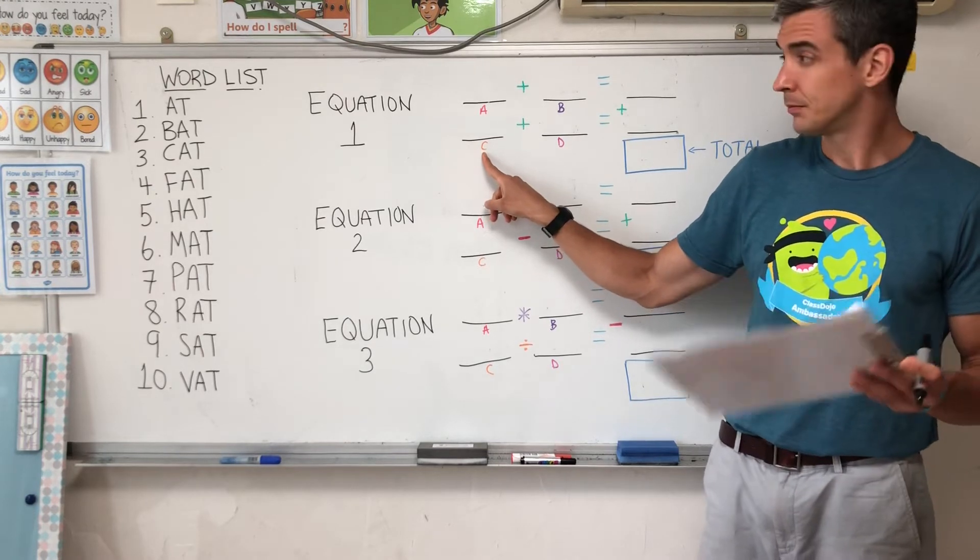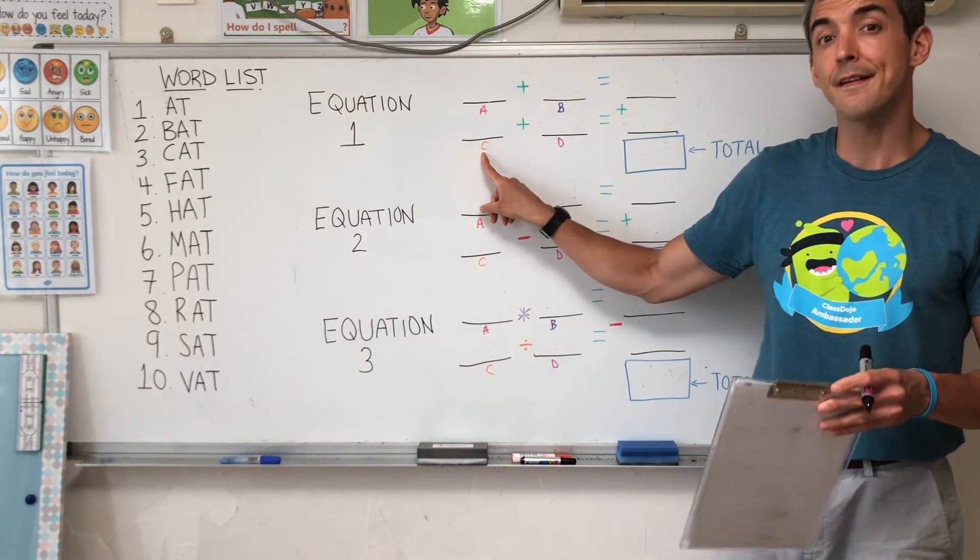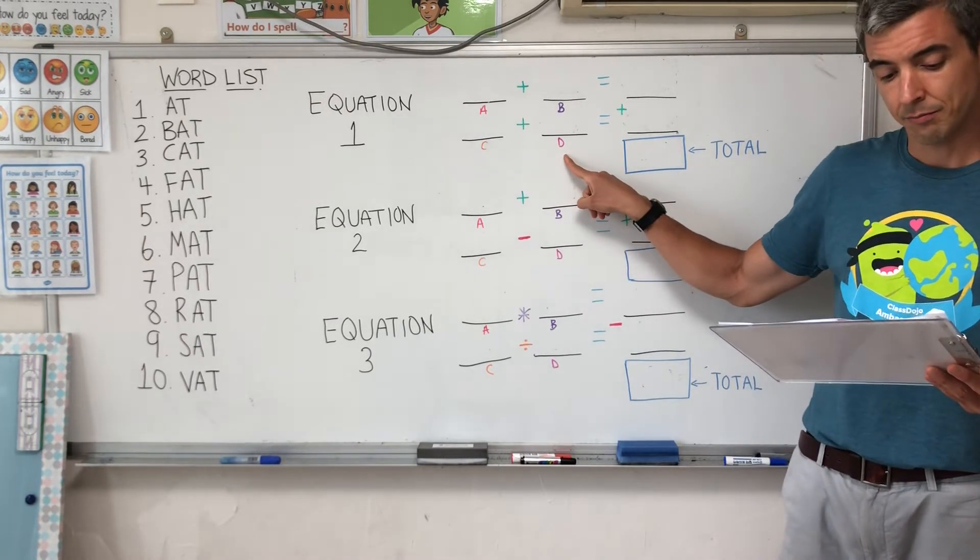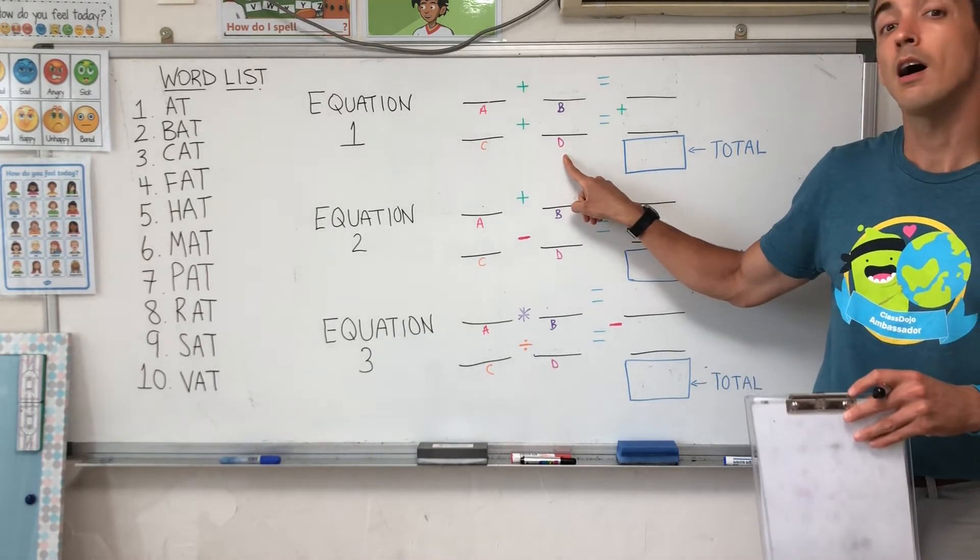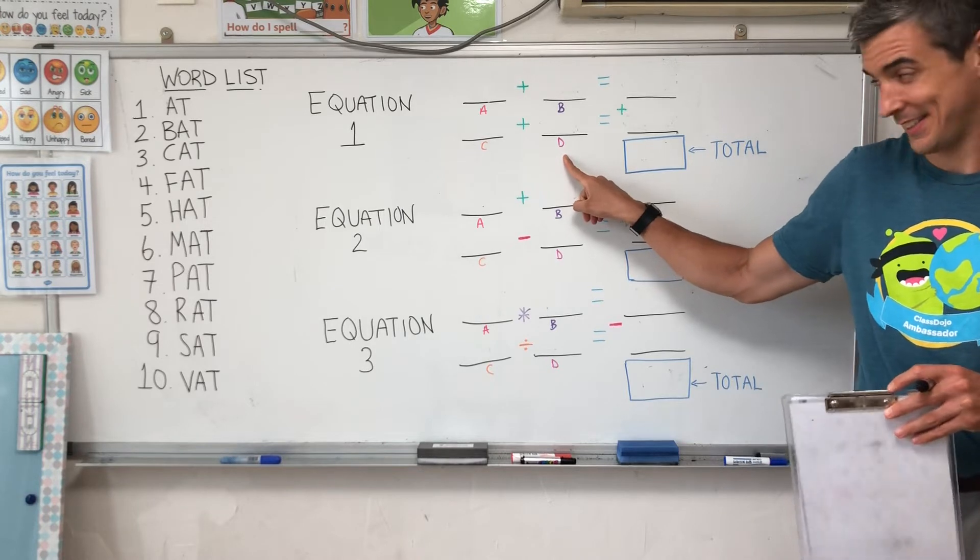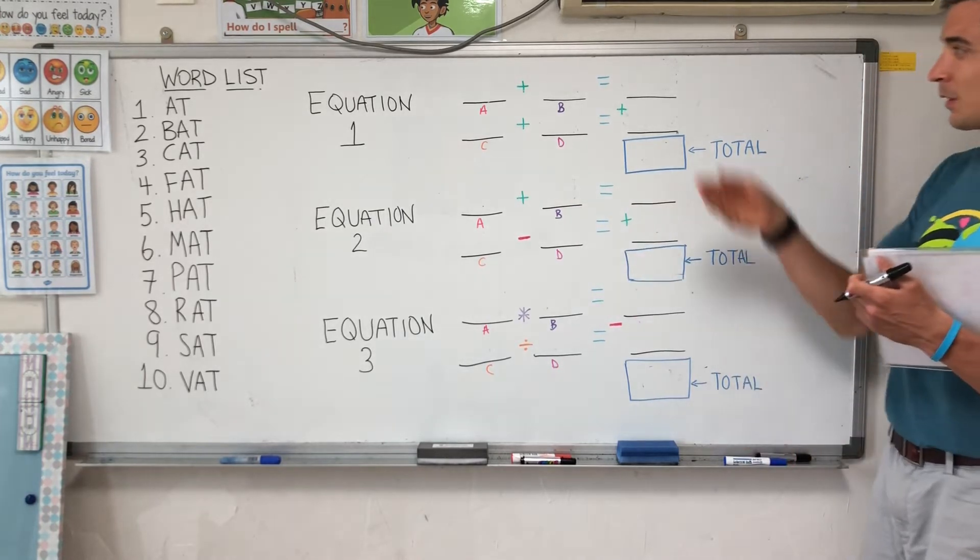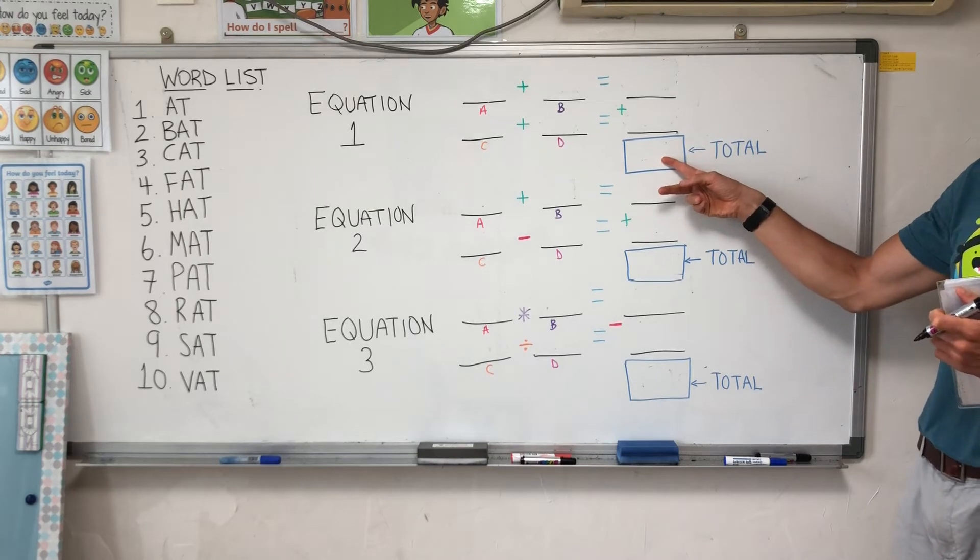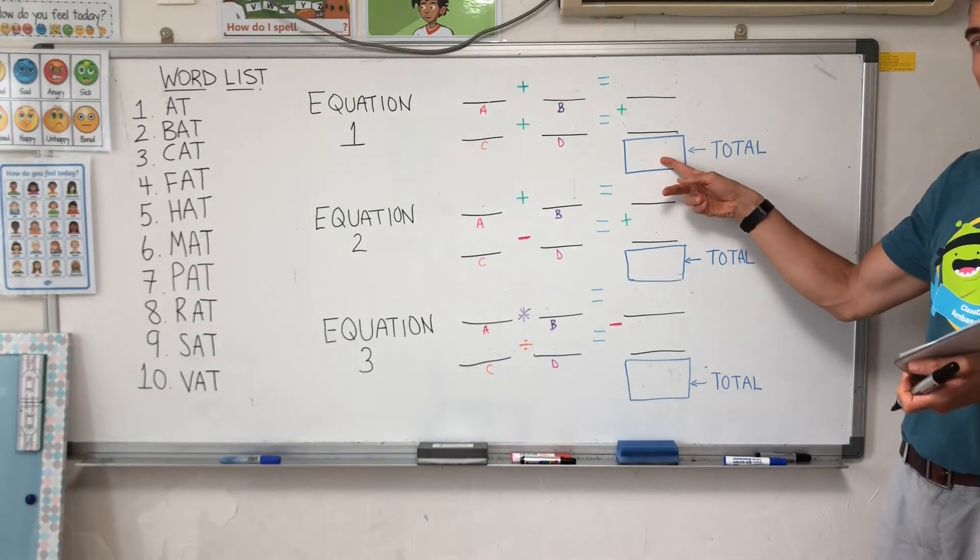C, f, f, fat. And D, ha, ha, hat. Do your math. And let's check. What is the total? How many?